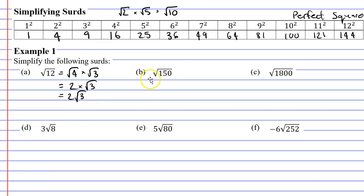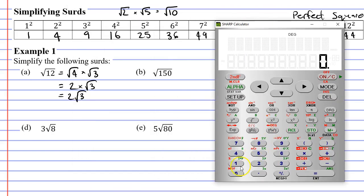Moving on to question B — this time we have 150 under the radical. We need two numbers that multiply to give 150. The key is to look at your perfect squares and think: which one divides evenly into 150? The number 25 will fit. Dividing 150 by 25 gives 6, so 6 times 25 is 150.